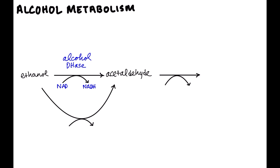Pay close attention to this generation of NADH because it's going to be really important as we come back to it. Next, we take acetaldehyde and convert it to acetate. The enzyme that does that is called aldehyde dehydrogenase. And because it's a dehydrogenase again, we take NAD and convert that to NADH — and that's important, we'll come back to it.